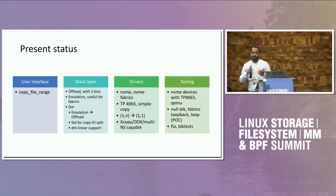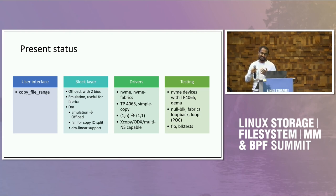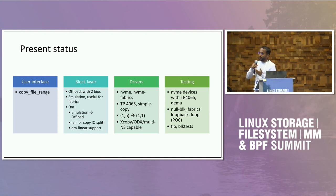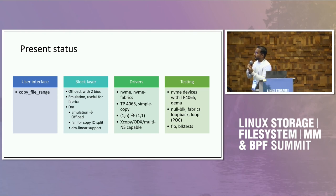In this conference, I mainly want to know what things are blocking and what I can do to get it reviewed. At present I need guidance on whether the current state is fine or I need to do anything extra. The user interface is the existing copy_file_range for cached cases, and for direct cases we go to copy offload, falling back to generic file copy if cached. From the block layer there are two bios.